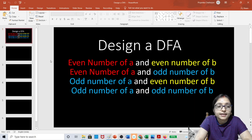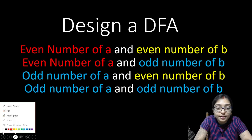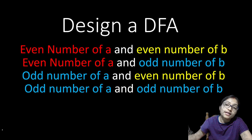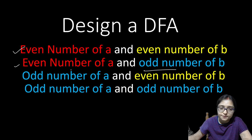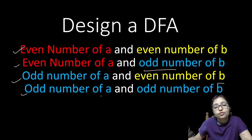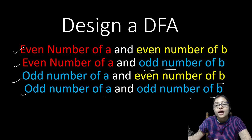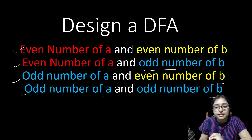Hello everyone, welcome to Unified Study. In this video I am going to discuss a very important area of DFA: how to design the DFA of even number of A and even number of B, even number of A and odd number of B, even number of A and even number of B, odd number of A and odd number of B. Actually, from one diagram by changing only the final state it is possible.